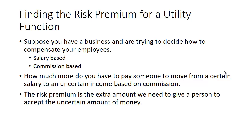I want to discuss how you can find the risk premium when you have a utility function. Suppose you have a business and you're trying to decide how to compensate your employees - salary based or commission based. How much more do you have to pay someone to move from a certain salary to an uncertain income based on commission?